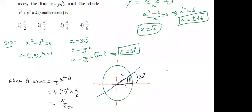One second, students. Here, the given circle is x² + y² = 4. Center is the origin and radius is 2. One more curve given is a straight line x = y√3, which gives y = (1/√3)x. This is in the form y = mx, where slope M = 1/√3 = tan θ, so θ = 30 degrees.